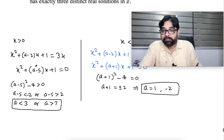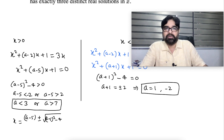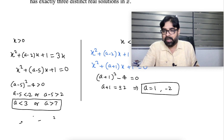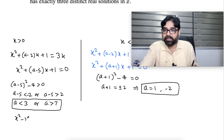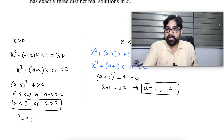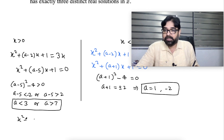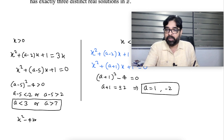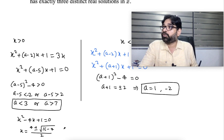Checking a equals 1: substituting into the first quadratic gives x squared plus (1 minus 5)x plus 1 equal to zero, which is x squared minus 4x plus 1 equal to zero. The roots are x equals (4 plus or minus root of 16 minus 4) divided by 2. We need to verify these roots are positive.